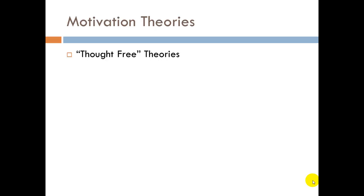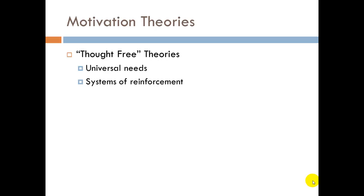This doesn't mean that these theories argued that thought doesn't happen, simply that cognition is not an important determinant of motivation. These theories emerged in the 1940s and 1950s and focused upon either universal needs or systems of reinforcement as the drivers of behavior. A person's behavior is driven by needs that are currently unmet, or the person does whatever results in a pleasurable outcome. Neither of these ways of thinking about motivation needs a thinking human to operate. In a moment, we'll consider two of these thought-free theories.